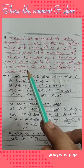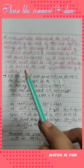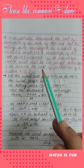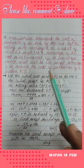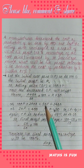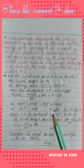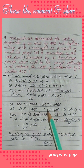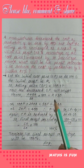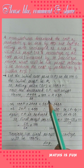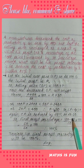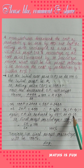Now it is given that the manufacturer again reduces the cost of his production by 25%. That means 25% of his cost price Rs 80 gives Rs 20. So Rs 80 minus Rs 20 gives Rs 60. His new cost price is now Rs 60.